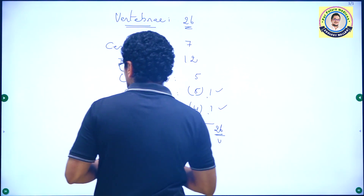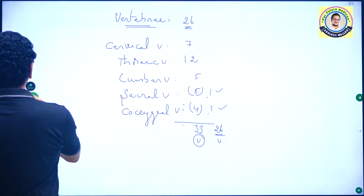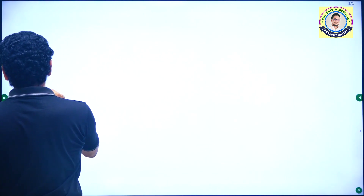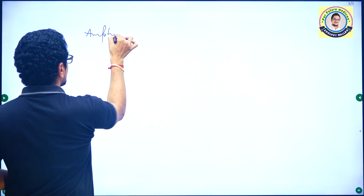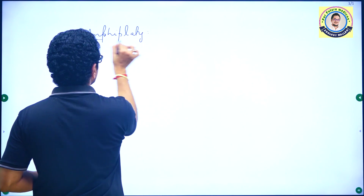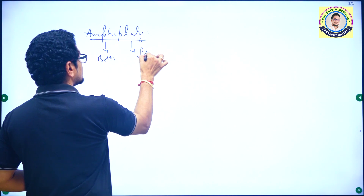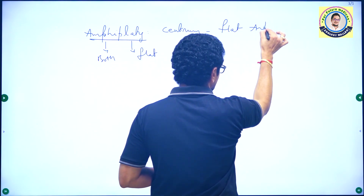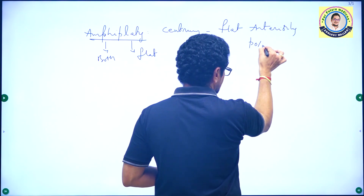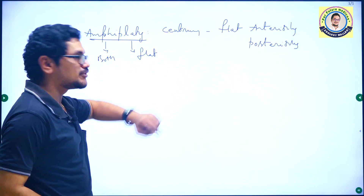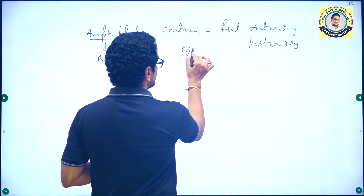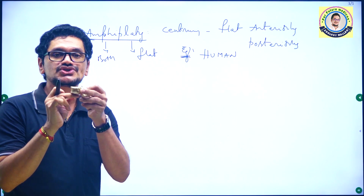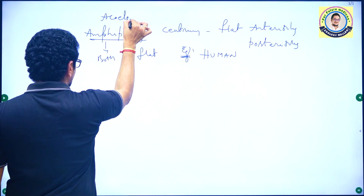If the centrum is flat both anteriorly and posteriorly, this is called amphiplatyan vertebrae. Amphi means both, platyan means flat. So if the centrum is flat both anteriorly and posteriorly, it is amphiplatyan vertebrae. There is no space anteriorly or posteriorly, so it may also be called acoelomate vertebrae.